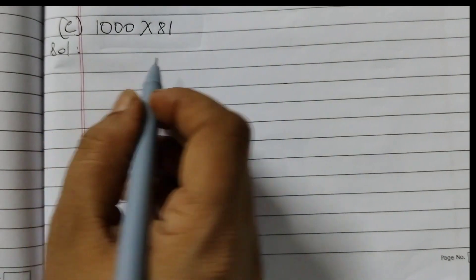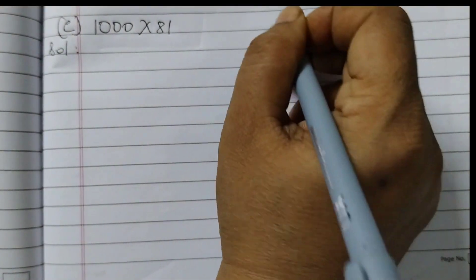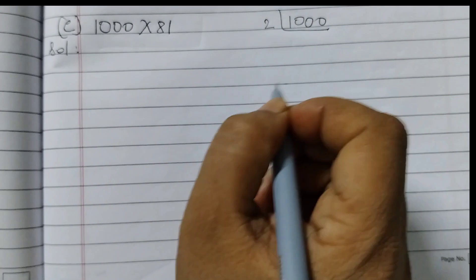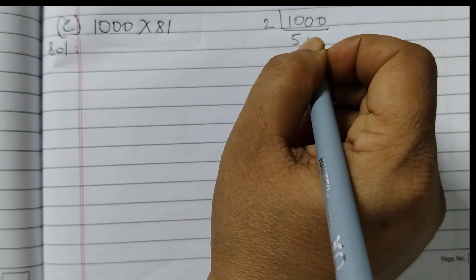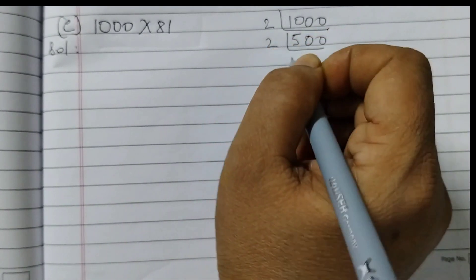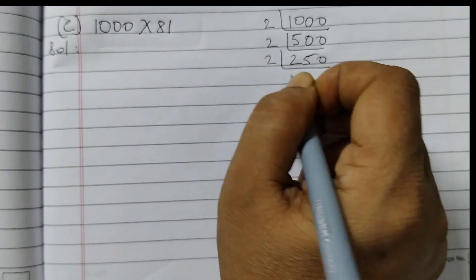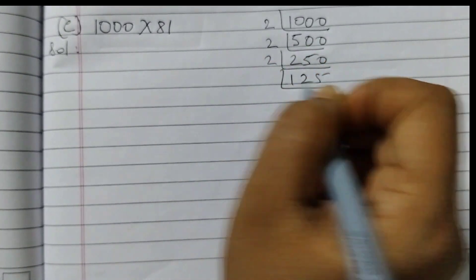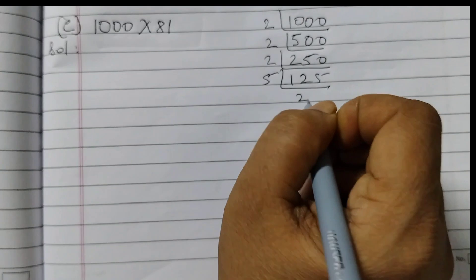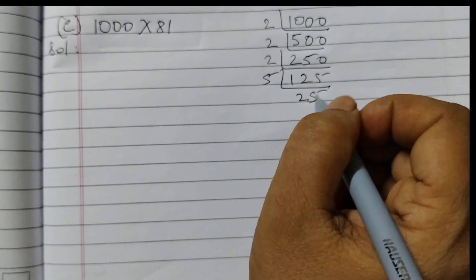The last one is 1000 into 81. So 1000 prime factors start with 2. 2×5 are 10, 0, 0, 2×2 are 4, 5, 0, 2×1, 25, 5×2 are 10, 5s are 25.